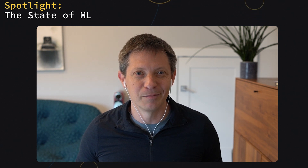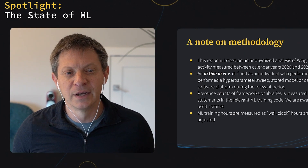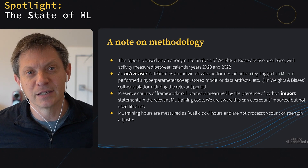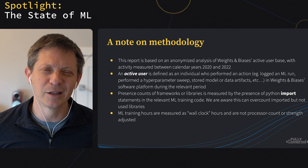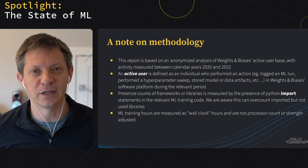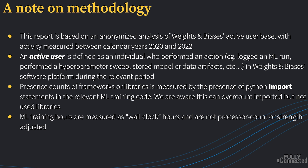Before we start, given this is the first of such reports, we'll give you a little bit of a caveat on the methodology we used for this report. First off, it's based on an anonymized analysis of usage on the Weights and Biases active user base and the activity measured on our platform — a little bit of data in 2020, but most of it really in 2021 and 2022. An active user is an individual that's performed some sort of activity on the Weights and Biases platform, whether logging a run, performing a hyperparameter sweep, logging some versioned model data or artifacts, etc.